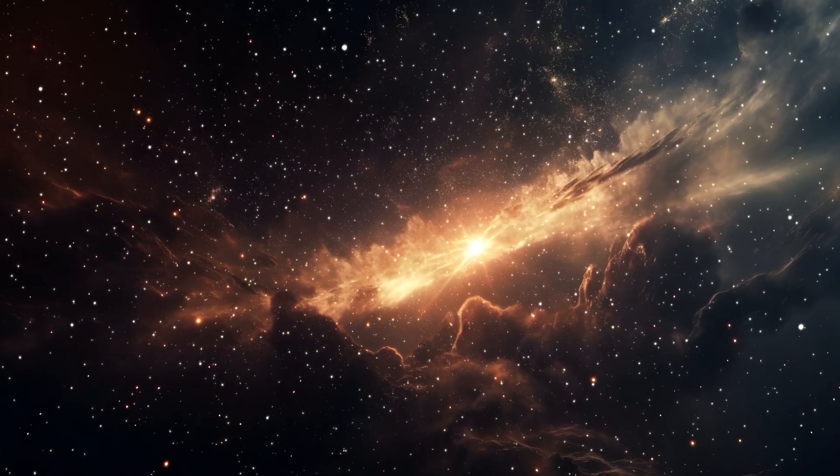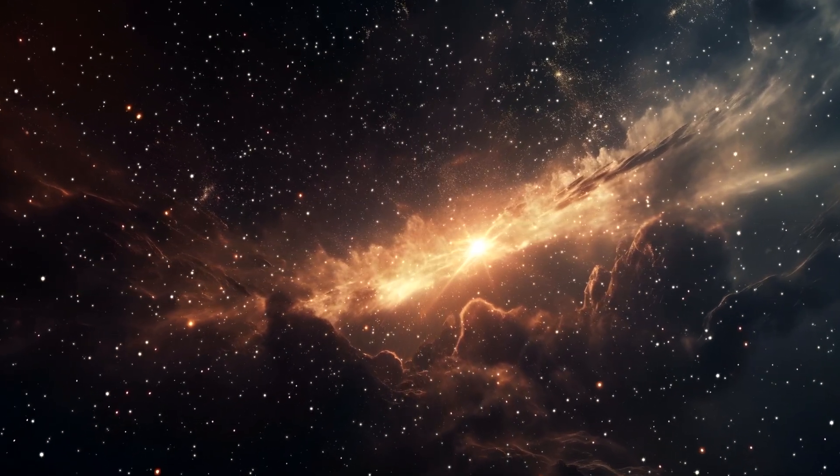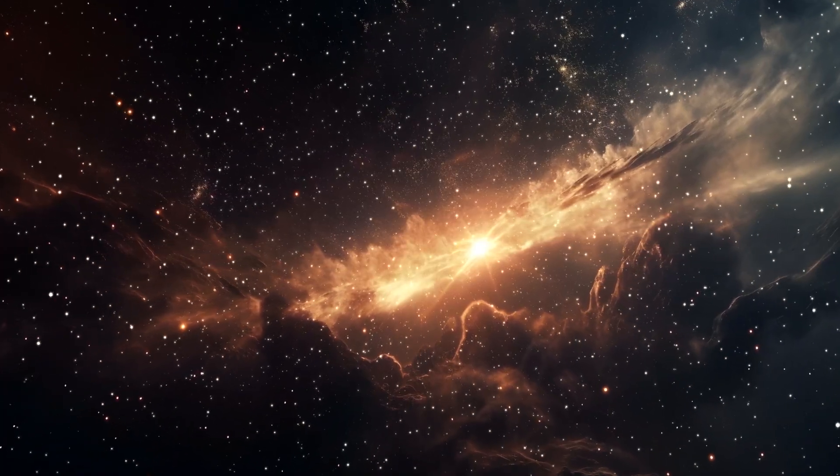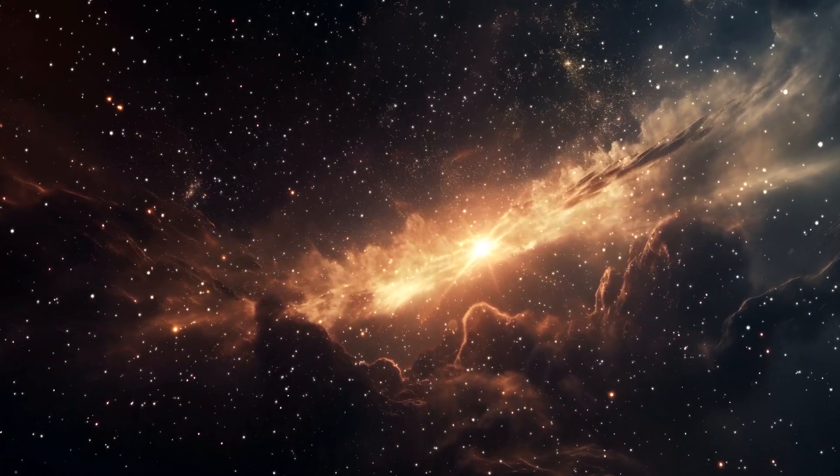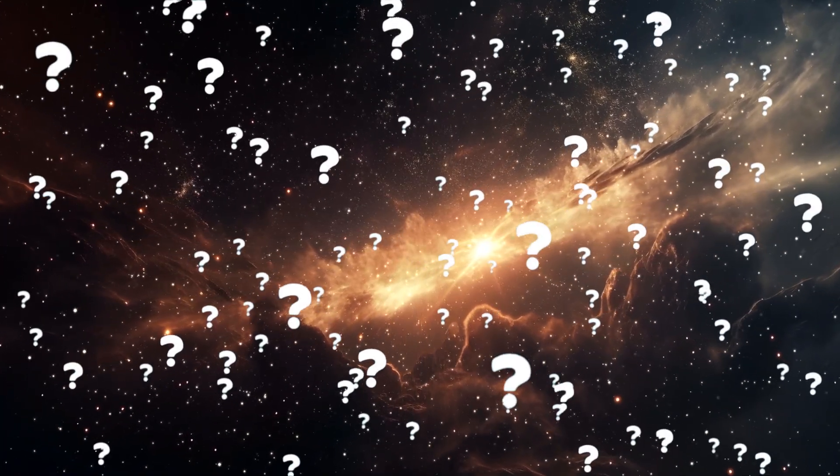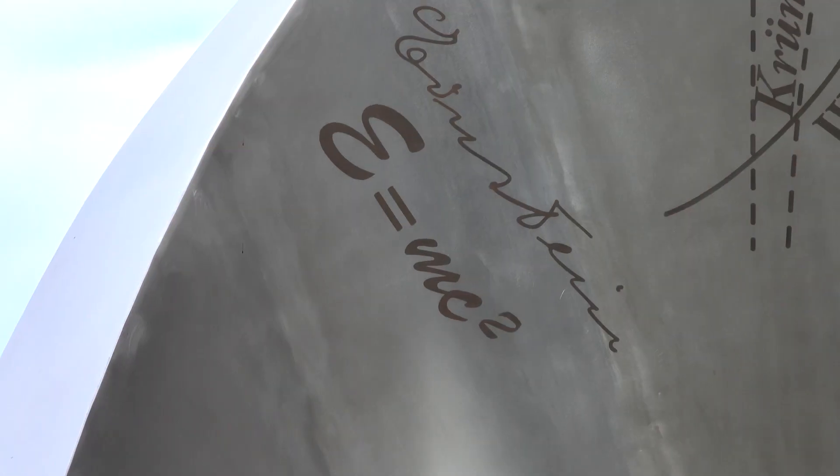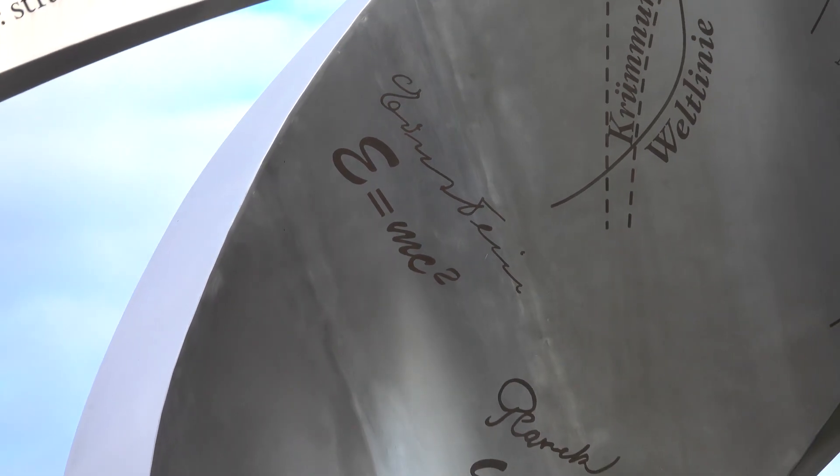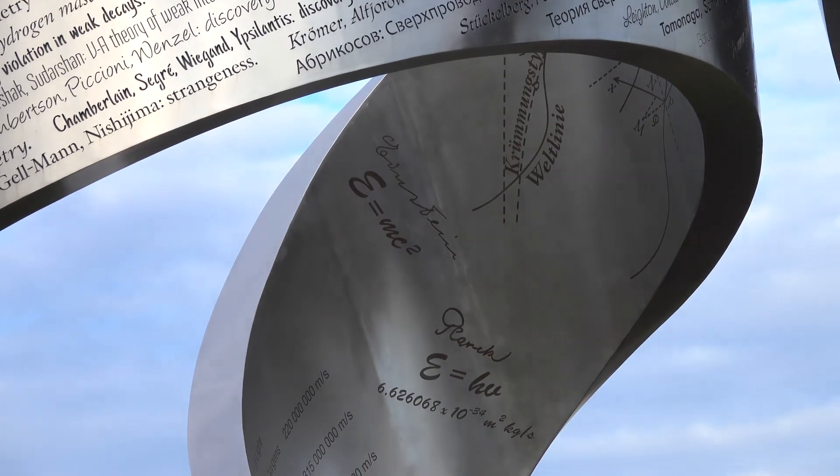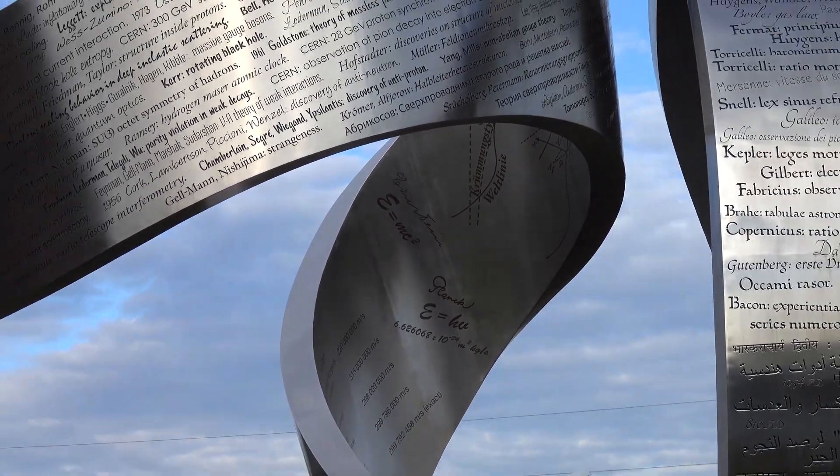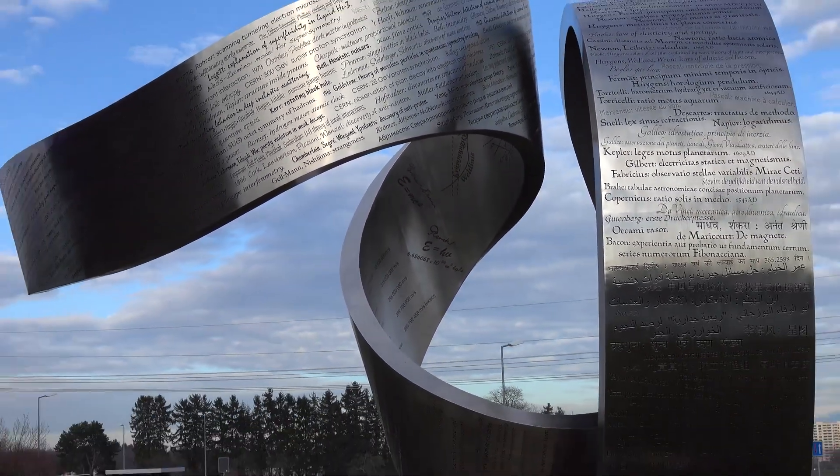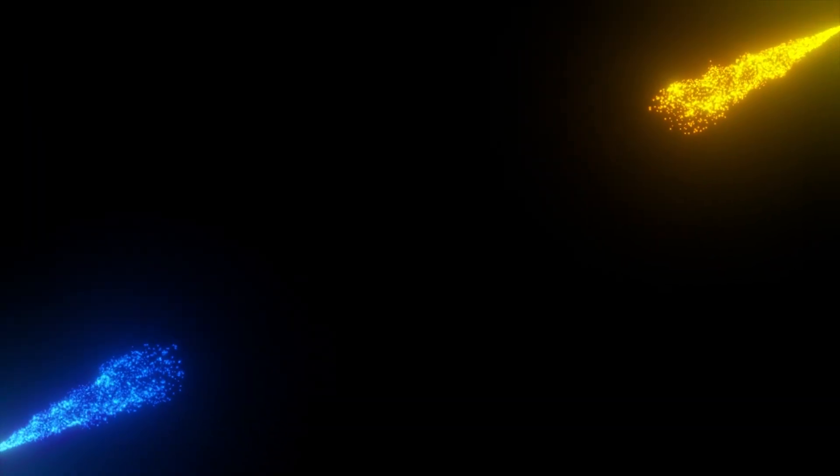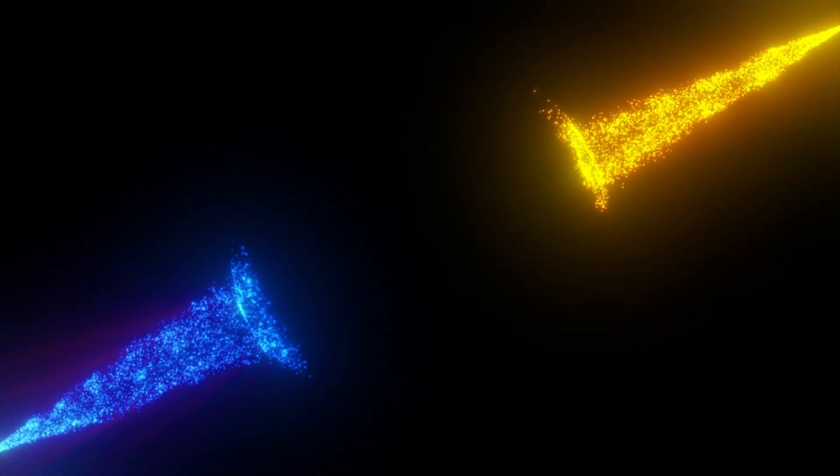It also sharpens our measurement of the top quark's mass, which plays a major role in predicting whether our universe is stable in the long term. Wait, what? Yes, physicists believe that the balance between the top quark's mass and the Higgs boson's mass could determine whether the universe will remain stable forever, or eventually collapse in a cosmic catastrophe billions of years from now. So this isn't just particle physics. It's existential physics.